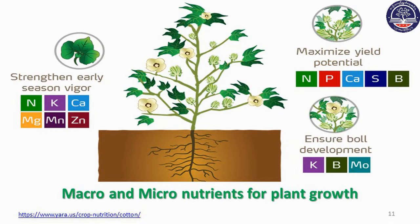Key nutrients include nitrogen, potassium, calcium, magnesium, and sulfur. Maximize your potential to account for nitrogen, phosphorus, calcium, and sulfur. Ensure the proper development with potassium and sulfur.